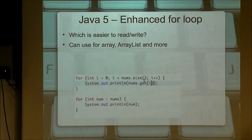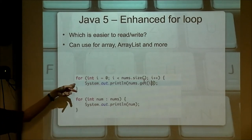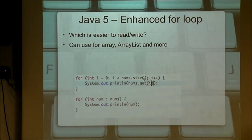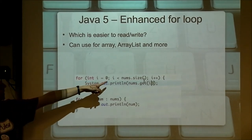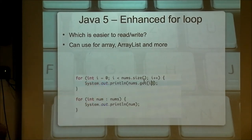Java introduced some syntactic sugar to make our code easier to write. Right now, if you want to loop through an array or an ArrayList, you have to write the traditional for-loop construct — and you probably know it by heart because you've written it so many times. But a new programmer hasn't, and they sit there thinking: is this zero or one? Is this less than or less than equal? Even if you know how to write it, it's a lot of typing.